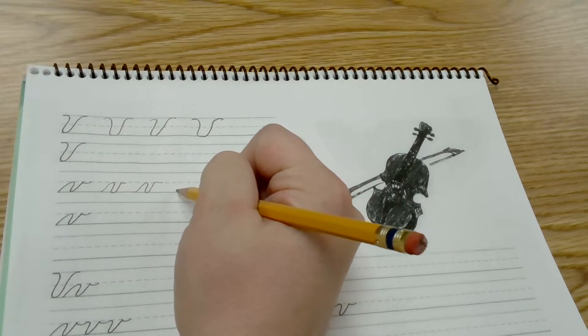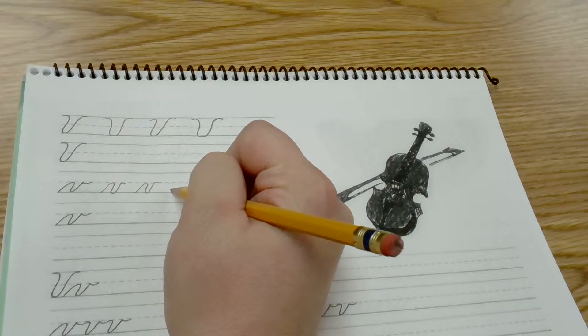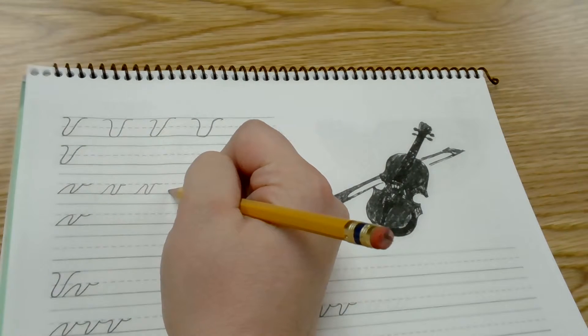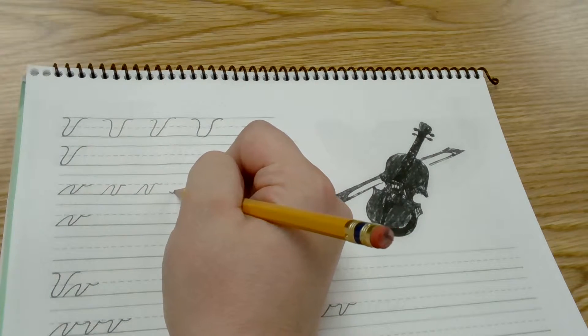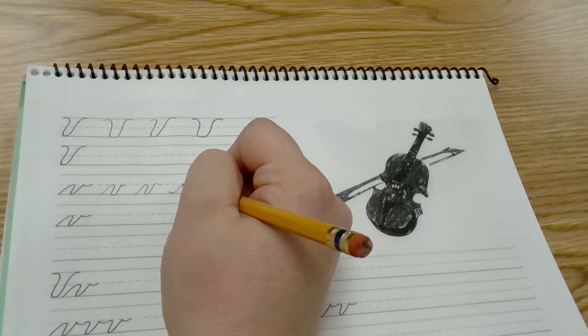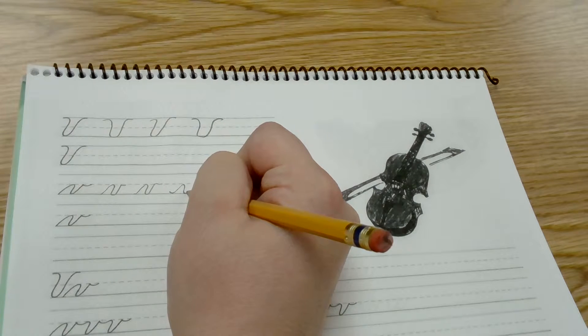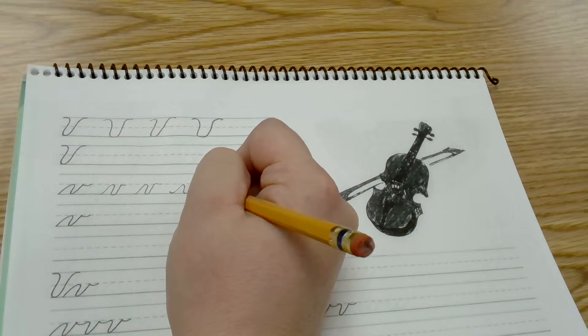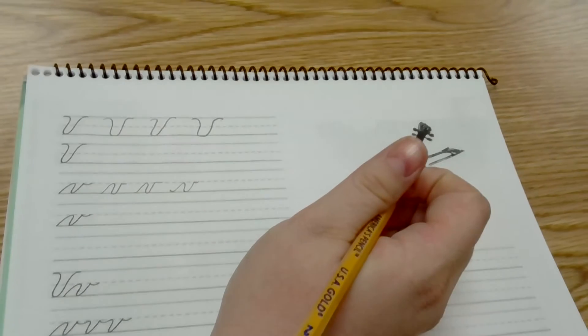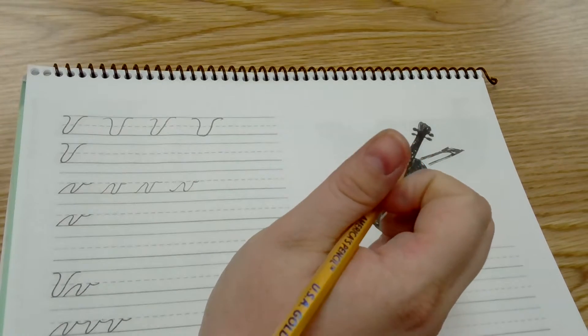To write a lowercase cursive V, start on the baseline and loop up similar to an N or an M. Once you come down, create the V, come back up to the baseline, and it has sort of a tail to come out.